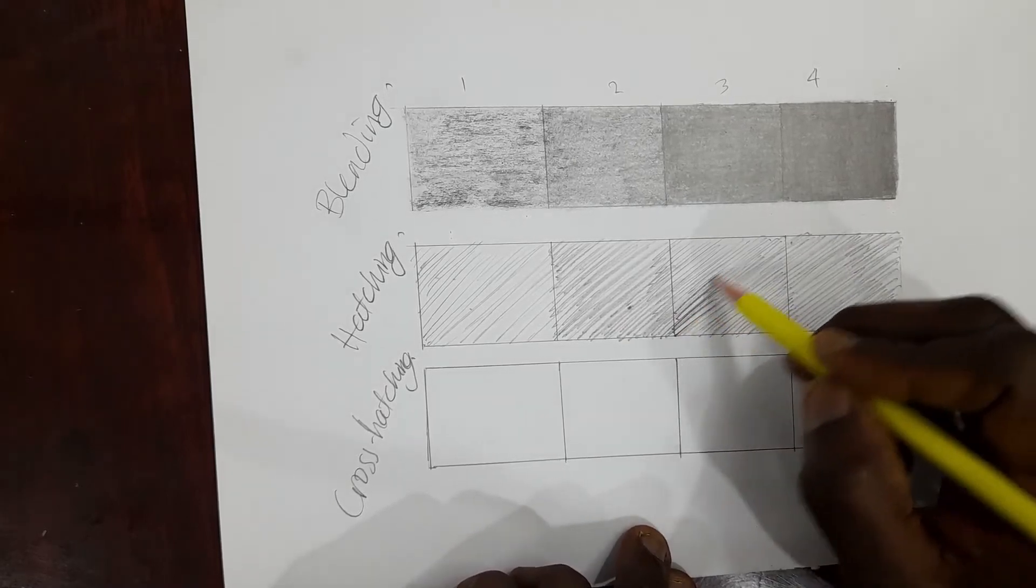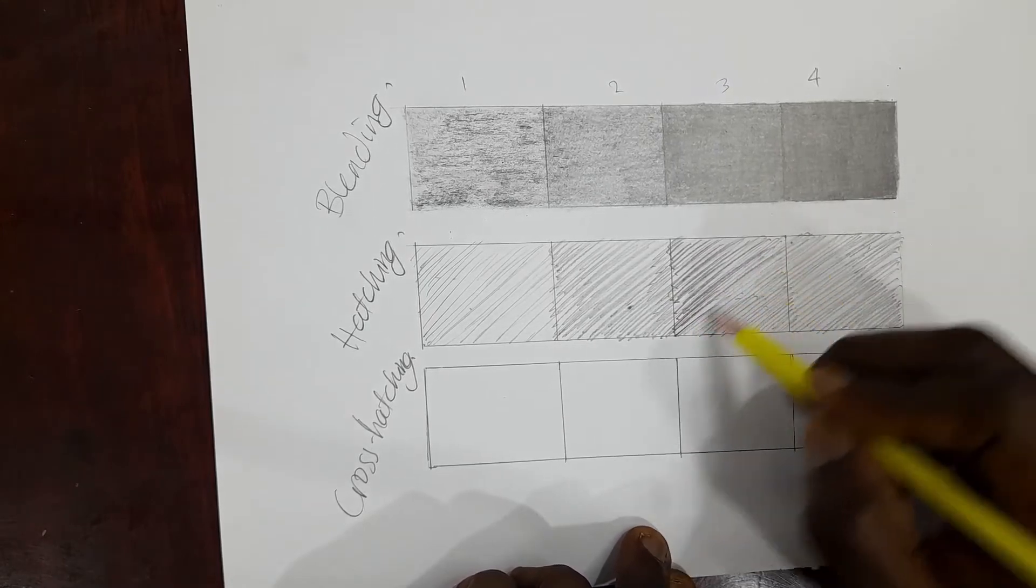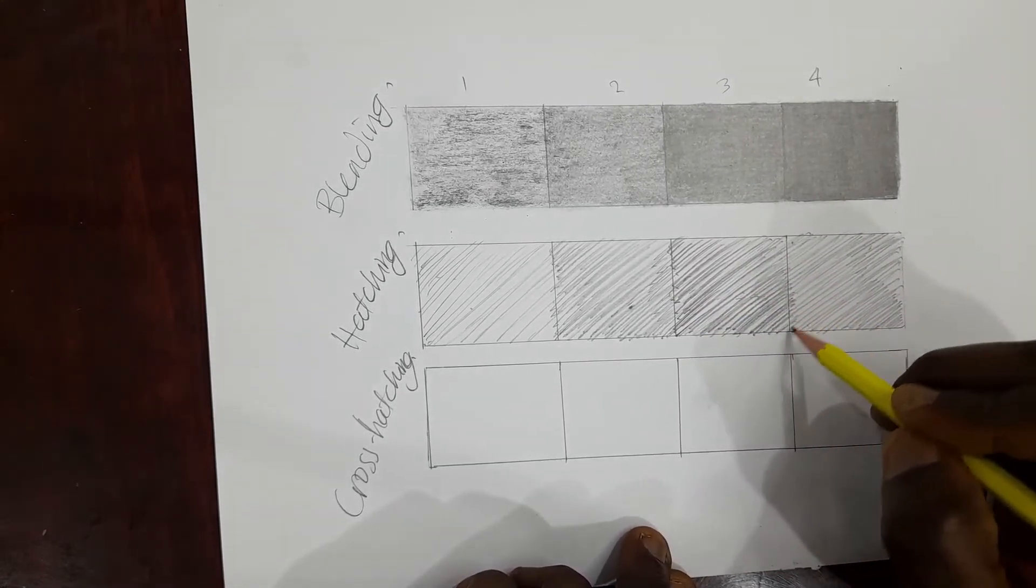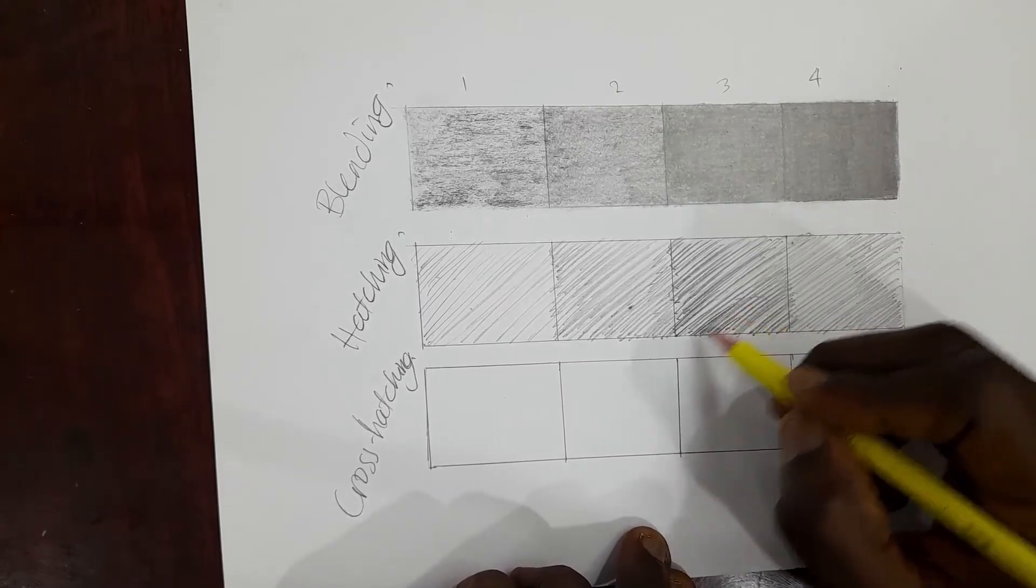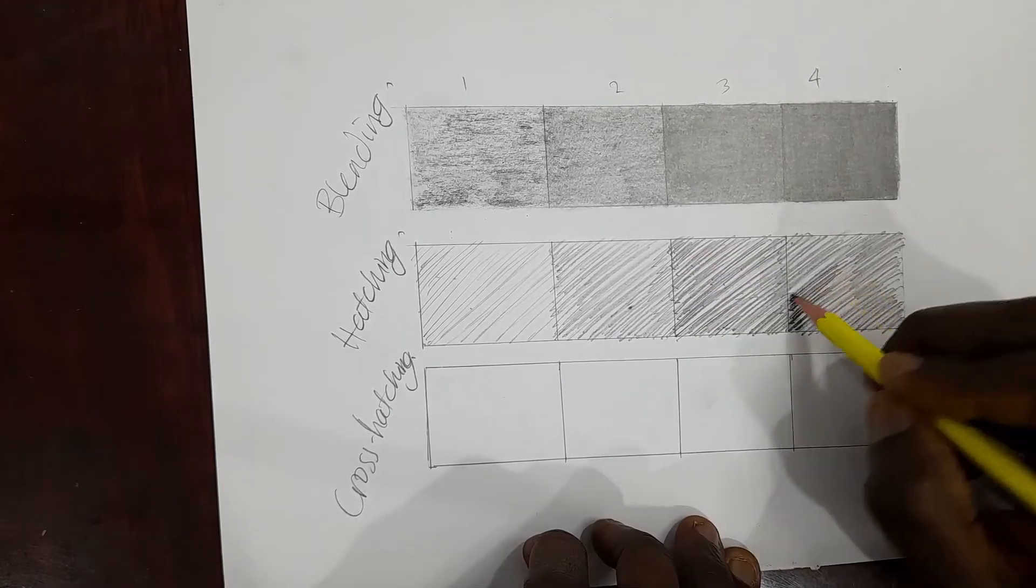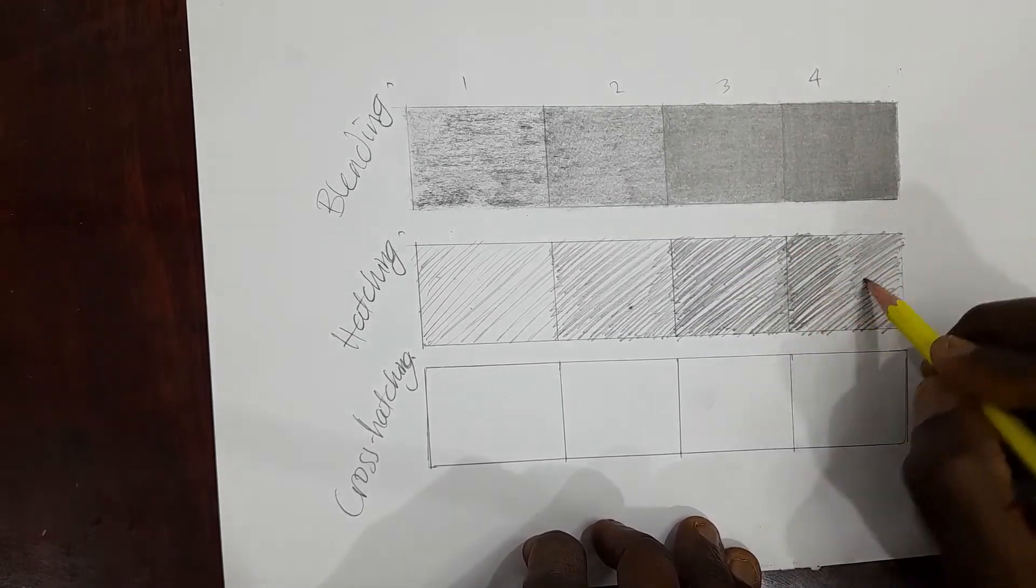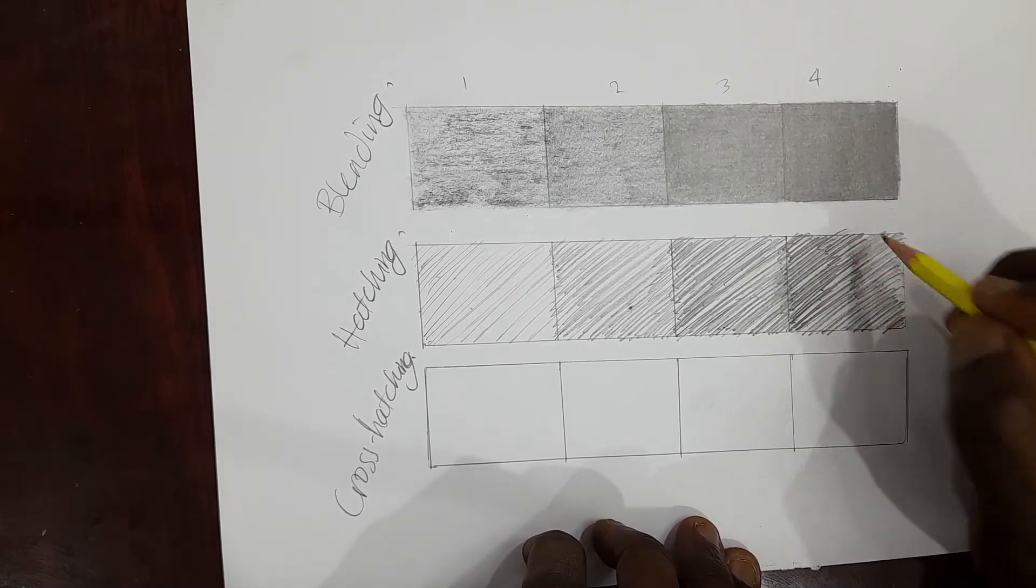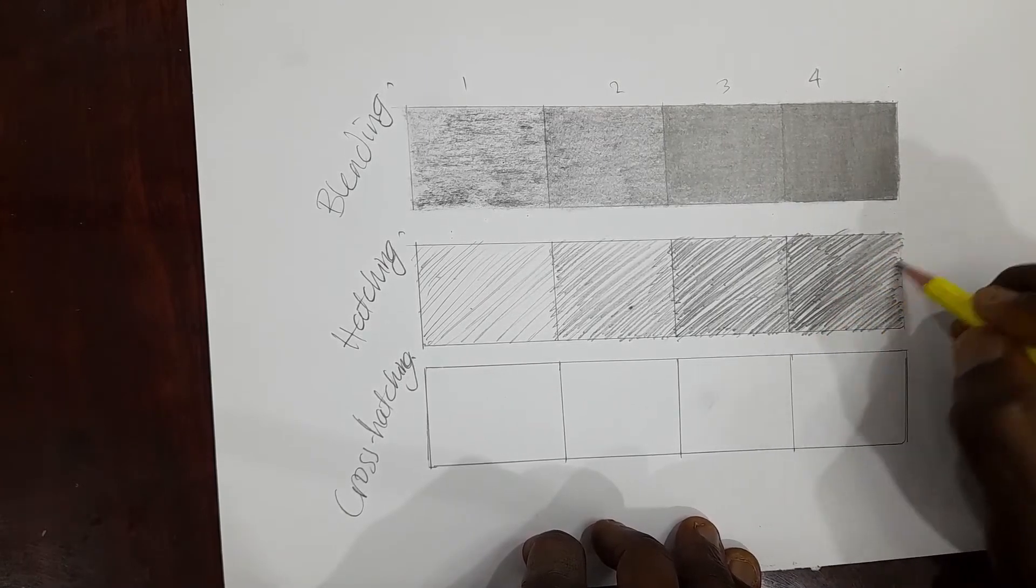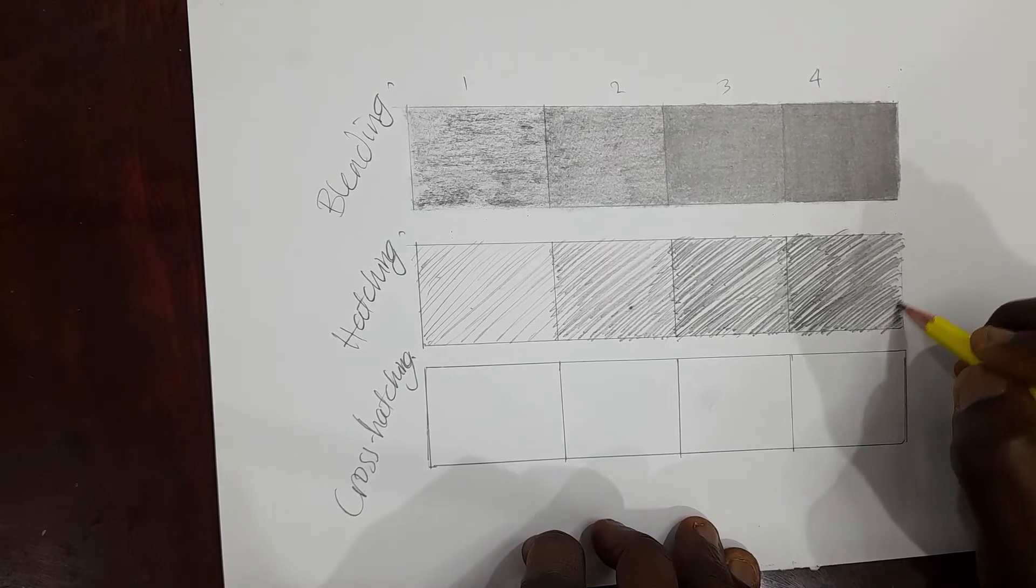Now I want to do my dark tone and all I am doing is just adding more lines. You will see that I'm starting to add a little more pressure as the pencil marks are getting darker. So I am adding more lines, just overlapping the lines I did before.